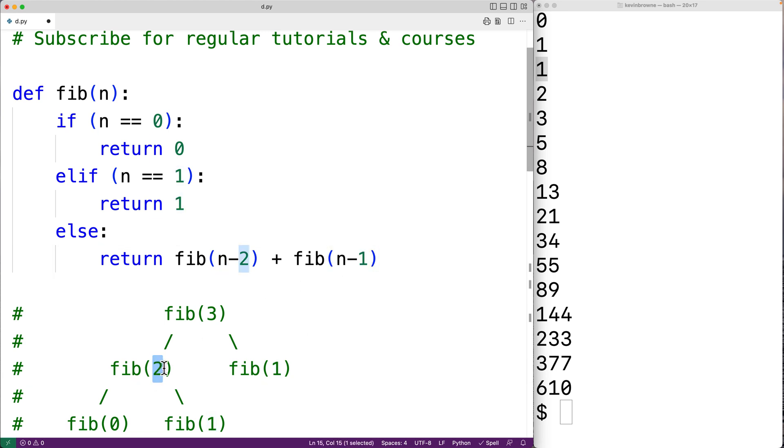And we already know how the function call to fib with 2 is going to work. We know it's going to return 1, and we know that fib(1) is also going to return 1, and 1 plus 1 is going to give us 2. And that is what we get here.